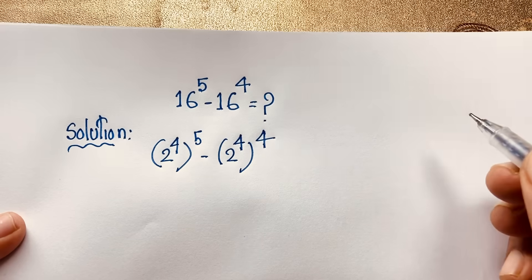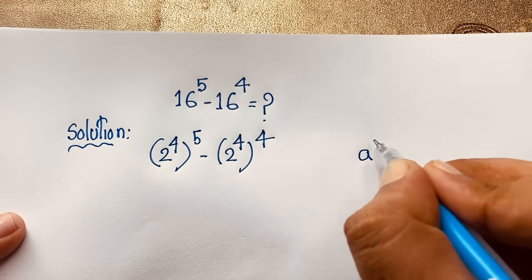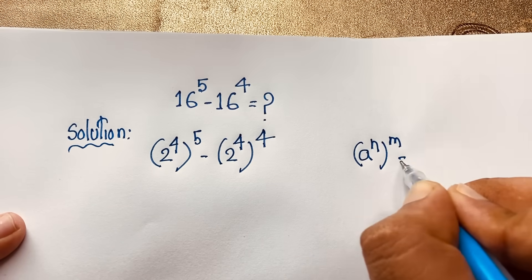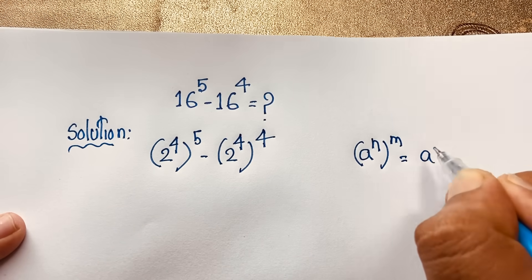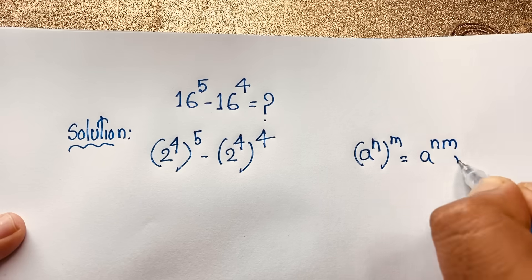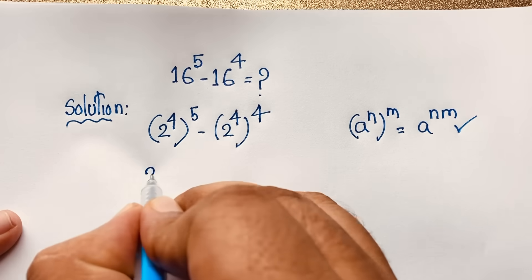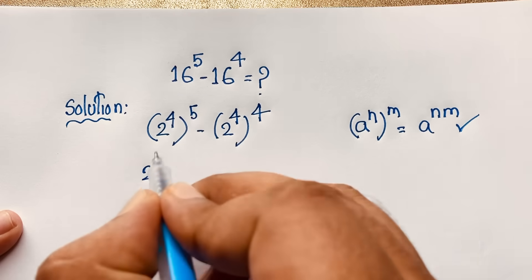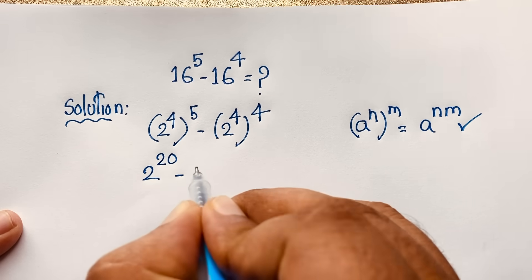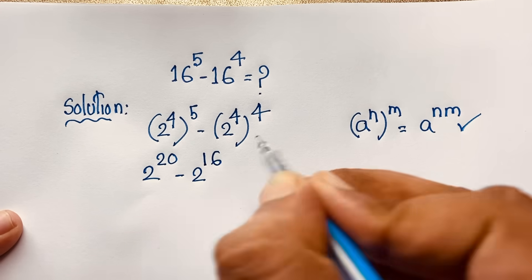Now, according to the exponential formula, a to the power n, bracket to the power m, equals a to the power n times m. Applying this formula here, it will be 2 to the power 4 times 5, which is 2 to the power 20, minus 2 to the power 4 times 4, which is 2 to the power 16.